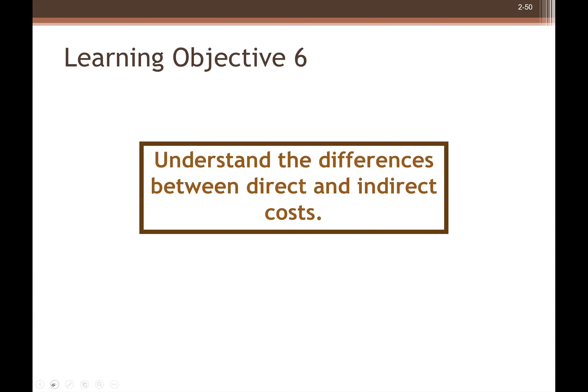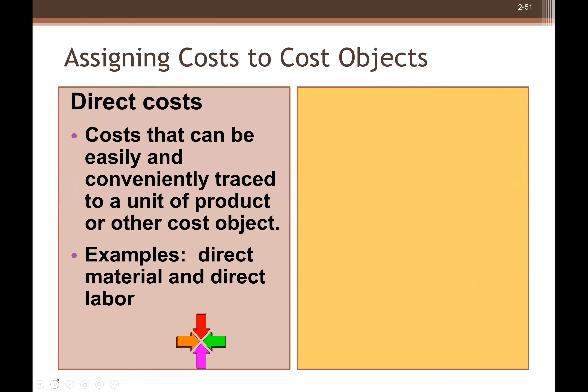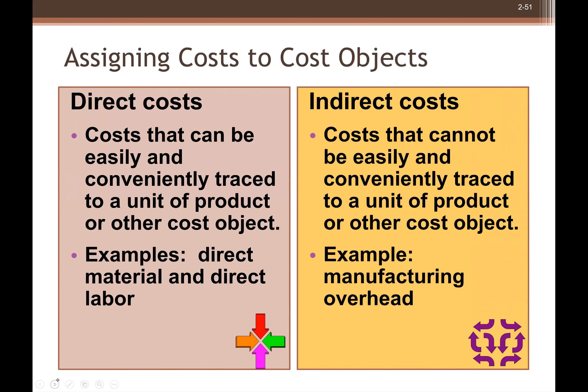The other understanding of cost, which we already know, is the difference between direct and indirect costs. Direct costs are those that can be easily or conveniently traced — for example, direct material and direct labor. Indirect costs are those which cannot be easily traced and can be applied on a unit of product — for example, manufacturing overhead.